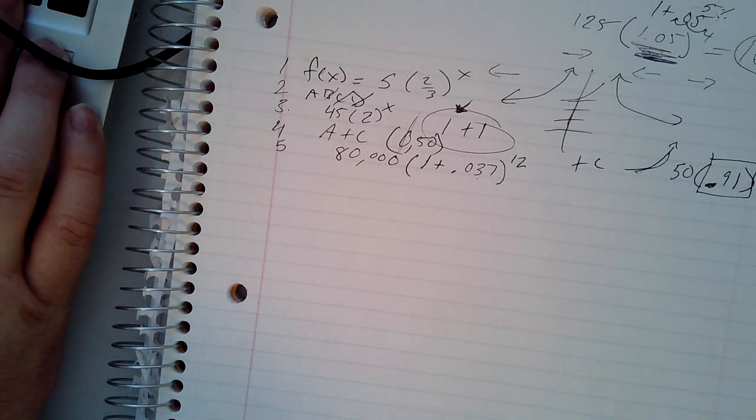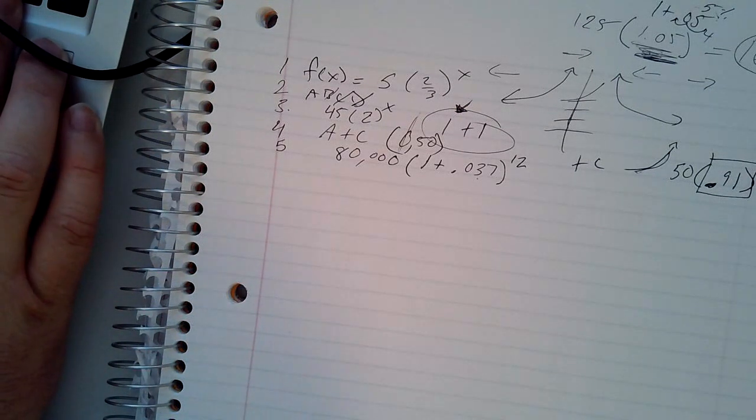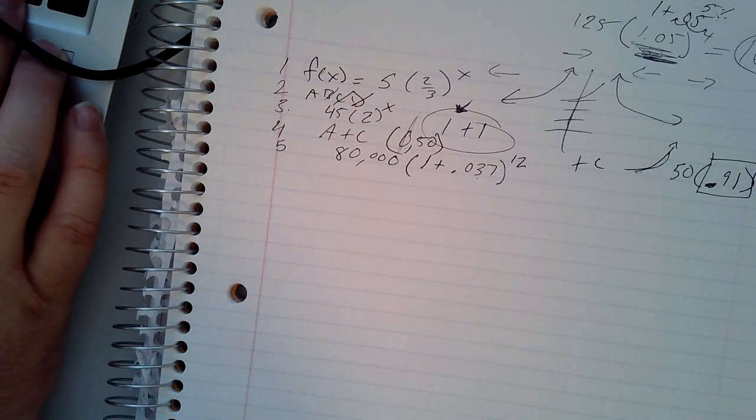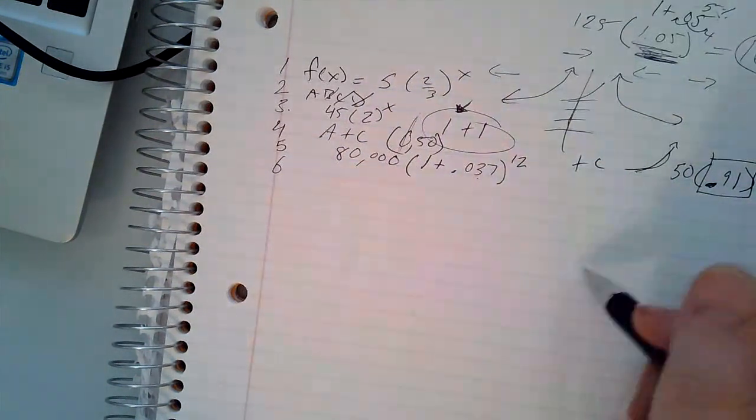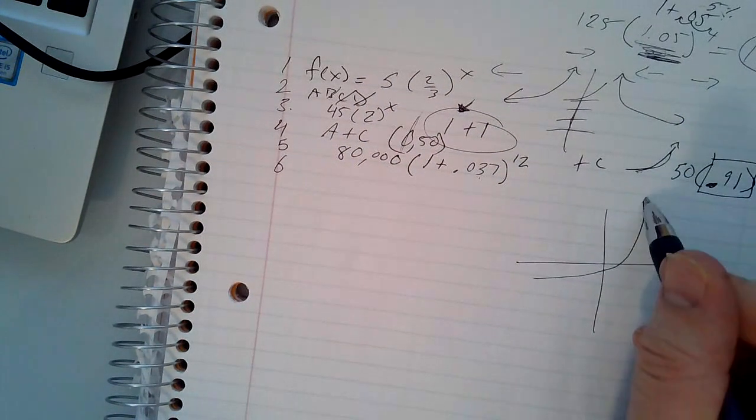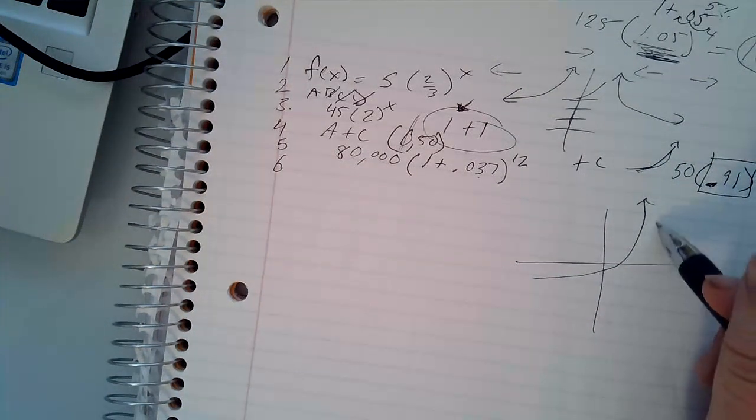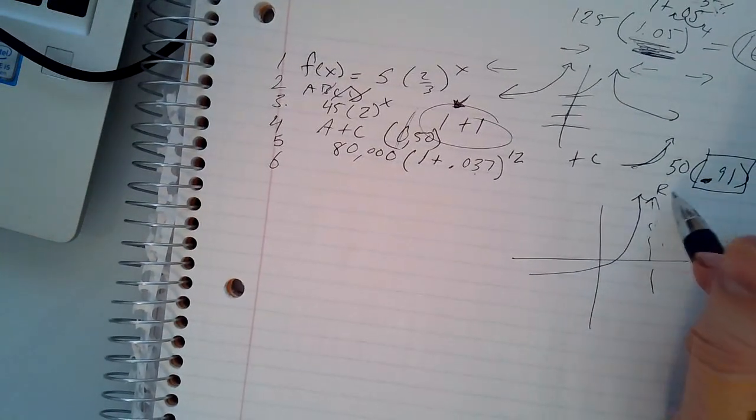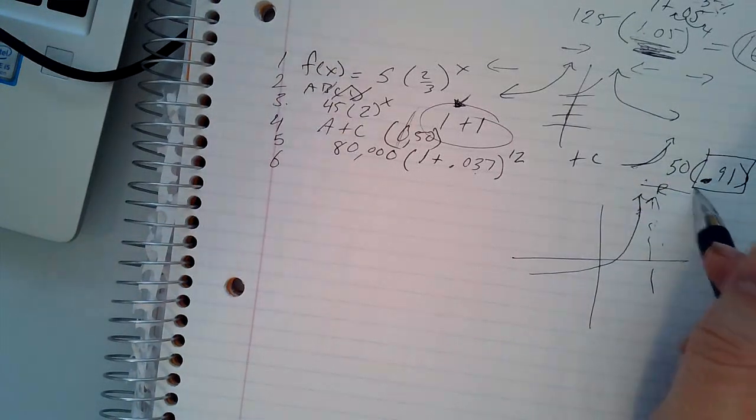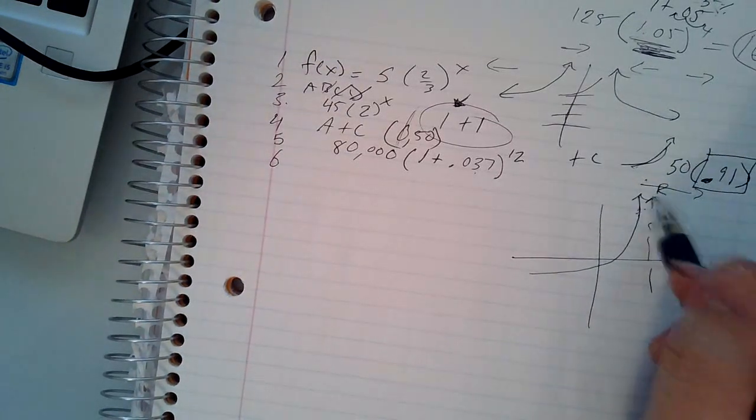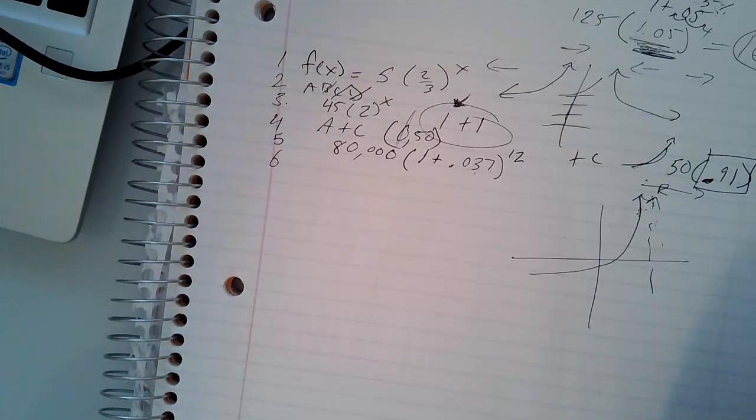The graph of an exponential function, number six, says which dashed line is an asymptote for the graph. Well, it has all sorts of dashed lines all over the place, but there's only one that follows the graph. It says this one, and this gives you an R here. No, because this is going to continue to go up and out forever and ever. It's definitely going to cross this line. That means it is not an asymptote.